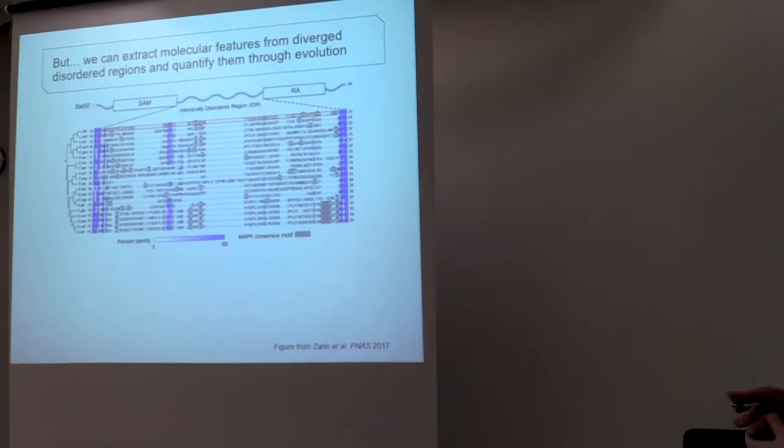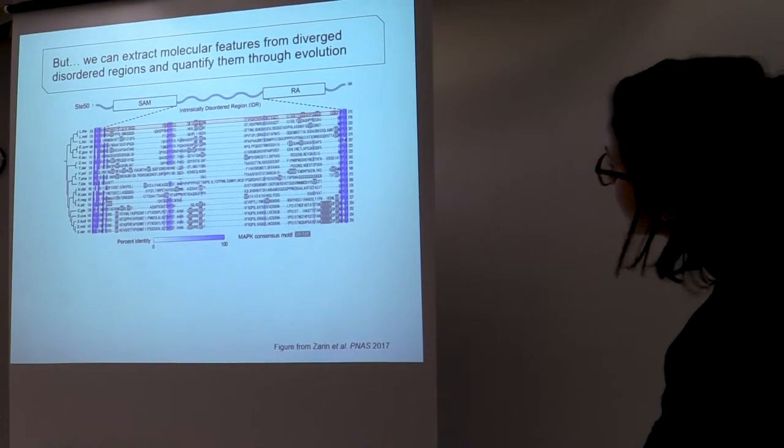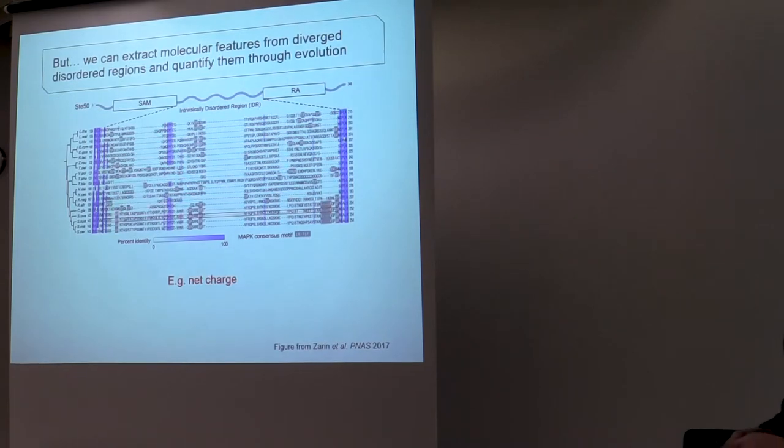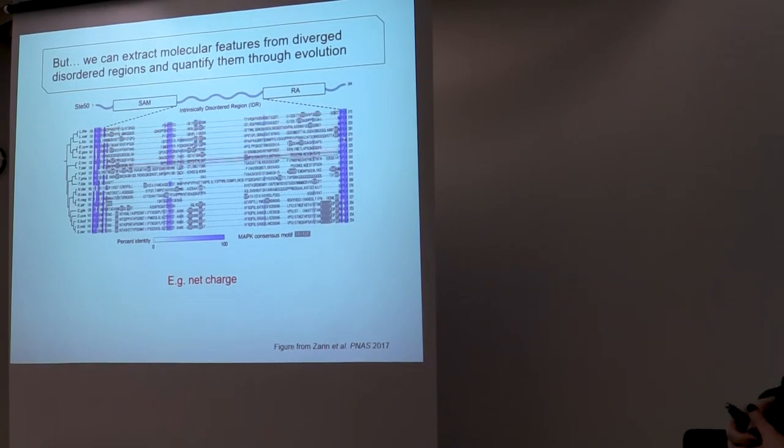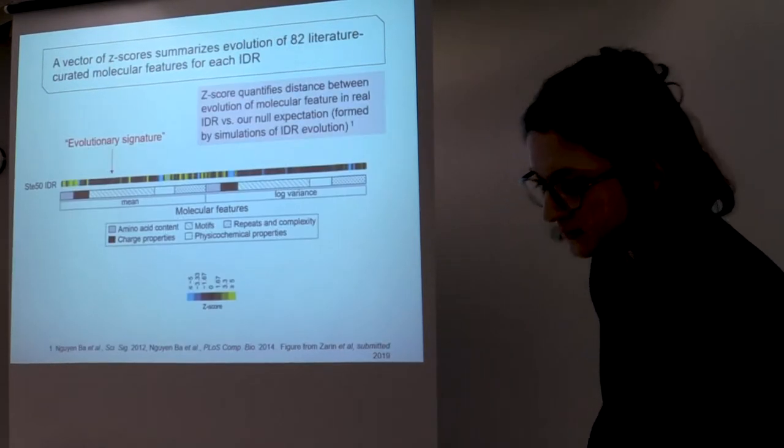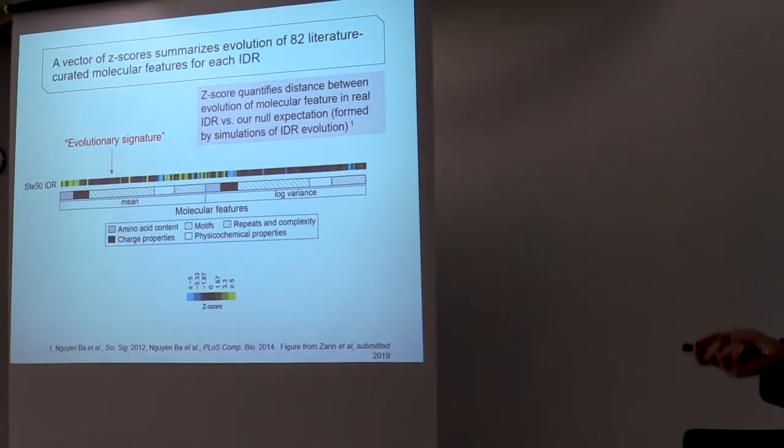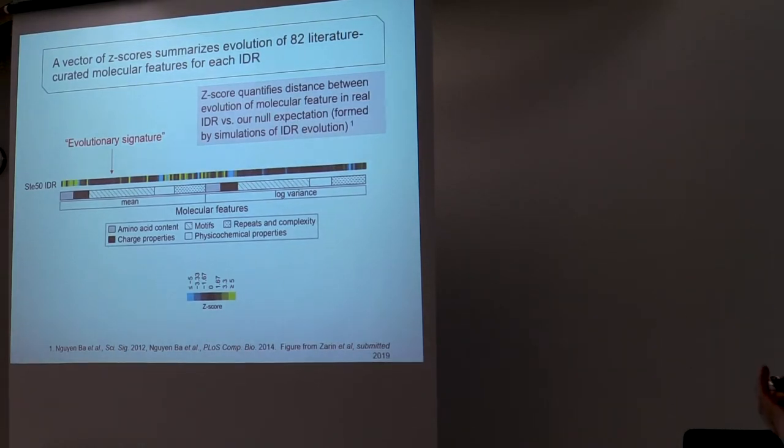But one idea that we had was to actually extract these molecular features from the disordered regions themselves, across the entire disordered region, and quantify them through evolution by using the orthologs of the sequences that we're interested in. So we can do this by using a z-score to quantify the distance between the evolution of a molecular feature in a real disordered region, and comparing that to our null expectation of disordered region evolution. I don't have time to go into how we form the null expectation, but basically it's based on simulations of IDR evolution.